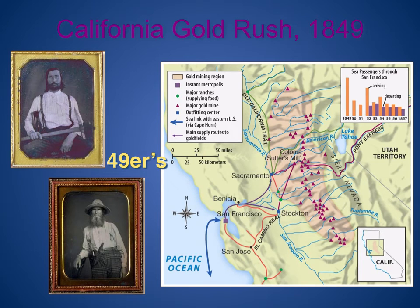The California Gold Rush was going on in 1849. That's why the San Francisco 49ers are known as the San Francisco 49ers — it references 1849. There was a huge number of people moving out to California because gold was found, and everyone wanted in.